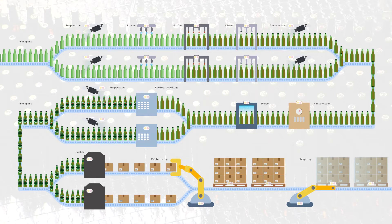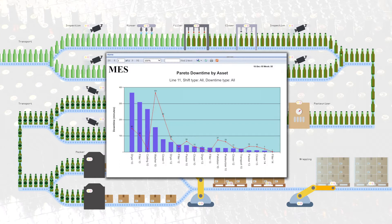To perform analysis, the operations team would typically analyze downtime information from the NES system. This system provides downtime event data for each machine on the line. However, as this data does not provide a holistic view of the relationships between asset downtime and overall output, the team had difficulty identifying the actual assets impacting production.